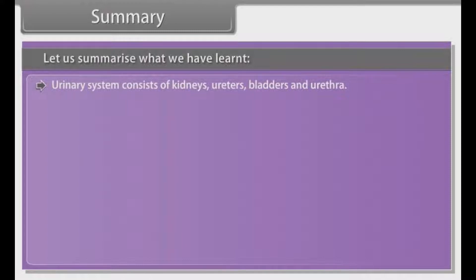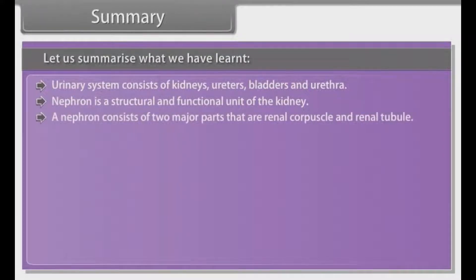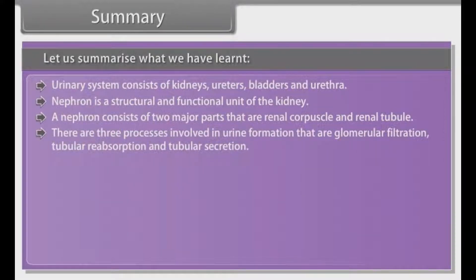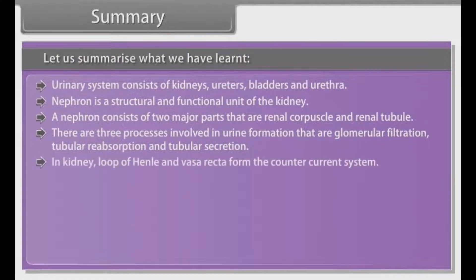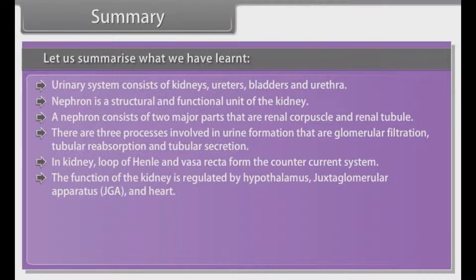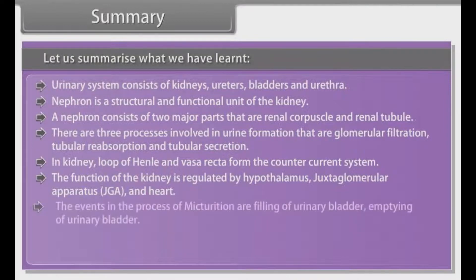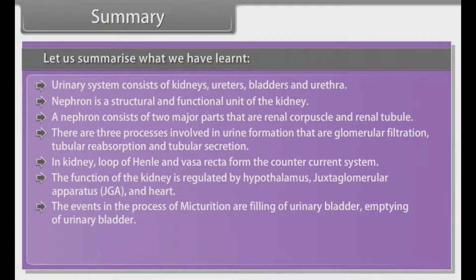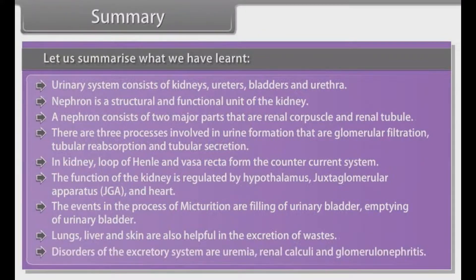Summary. The urinary system consists of kidneys, ureters, bladder and urethra. The nephron is the structural and functional unit of the kidney, consisting of two major parts: the renal corpuscle and the renal tubule. The three processes involved in urine formation are glomerular filtration, tubular reabsorption and tubular secretion. In the kidney, the loop of Henle and the vasa recta form the counter-current system. The function of the kidney is regulated by the hypothalamus, juxtaglomerular apparatus and heart. The events in micturition are filling and emptying of the urinary bladder. Lungs, liver and skin are also helpful in excretion. Disorders of the excretory system include uremia, renal calculi and glomerulonephritis.